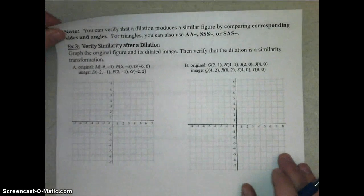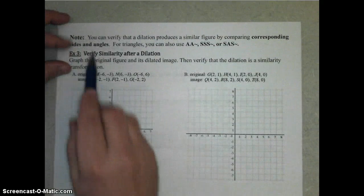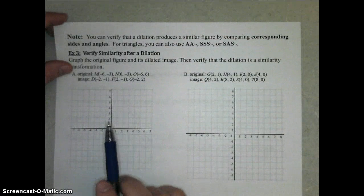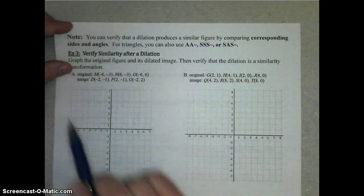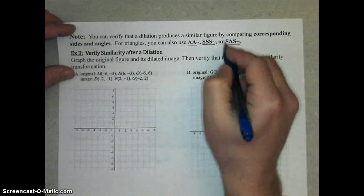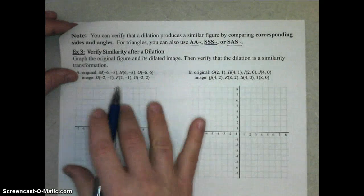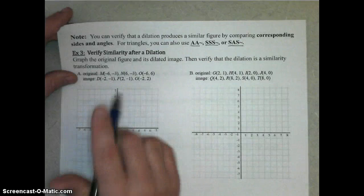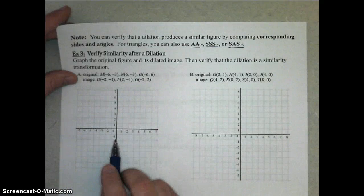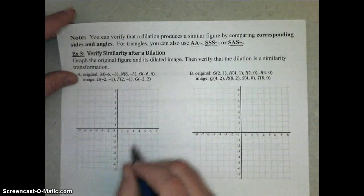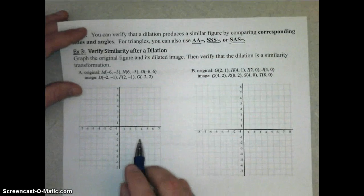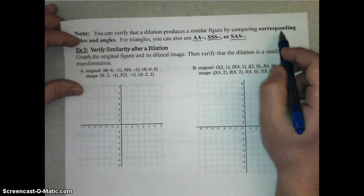This leads us to our last set of examples. You can verify that a dilation produces a similar figure by comparing corresponding sides and angles. Or, if we're specifically talking about triangles, you can also use angle-angle similarity, side-side-side similarity, or side-angle-side similarity — these only apply to triangles. In this example, we're going to graph the original figure and its image on the coordinate plane, and then verify similarity to confirm it's a true dilation.